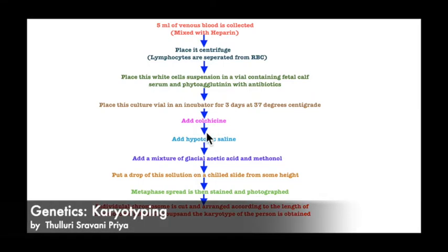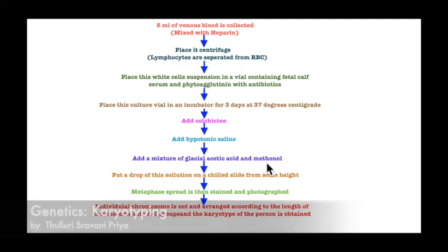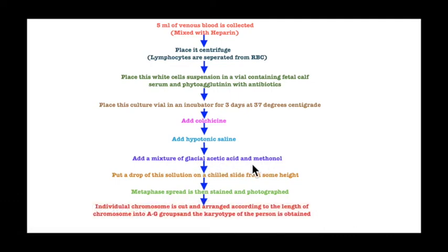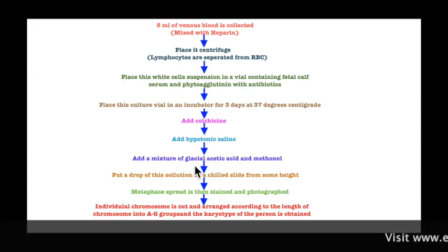We then take the chromosomes at the metaphase stage and add hypotonic saline to the cells. By adding hypotonic saline, the cells swell up and are separated, allowing us to identify the chromosomes. To this suspension we add glacial acetic acid and methanol, which act as fixatives to fix the cells.